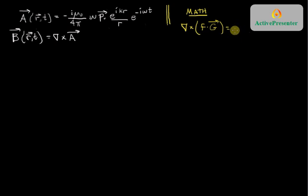It's sort of like a product rule. So the first term is f times the curl of g and the second term is minus g cross product with the grad of f.